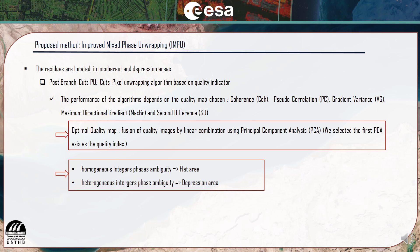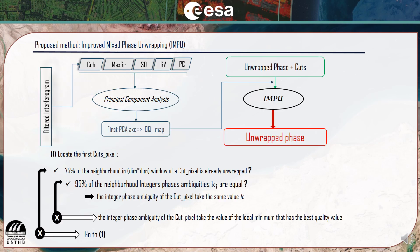Furthermore, homogeneous and heterogeneous zones are processed differently. The proposed processing is as follows: we locate the first cut pixel. If 75% of the neighborhood is already unwrapped, then, if 95% of the neighborhood has the same absolute phase, the area is considered as homogeneous and the cut pixels take the same absolute phase value. Else, the area is considered as heterogeneous and the cut pixels take the value of the local minimum that has the best quality. These steps are repeated until all pixels are unwrapped.